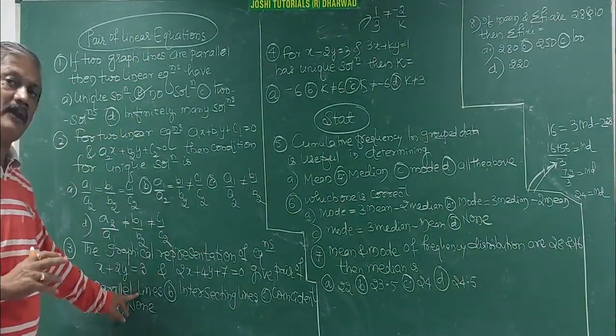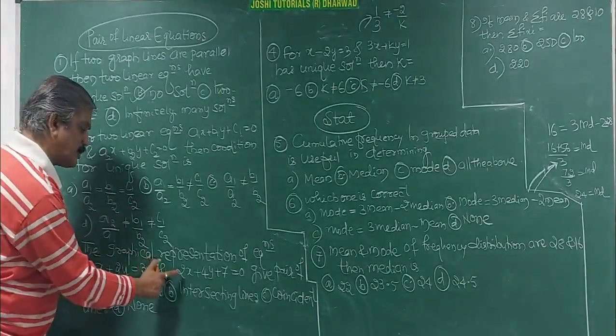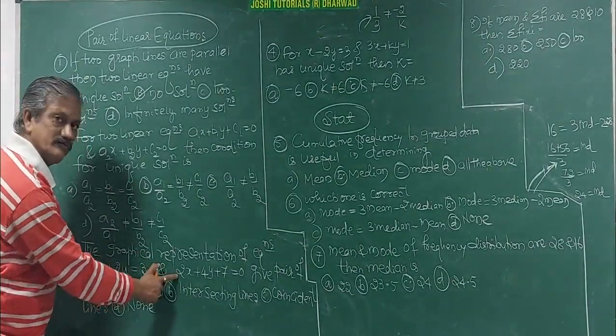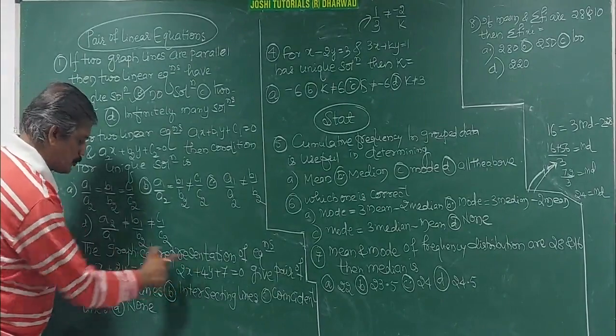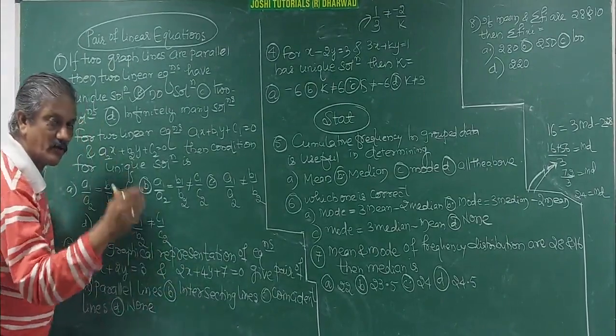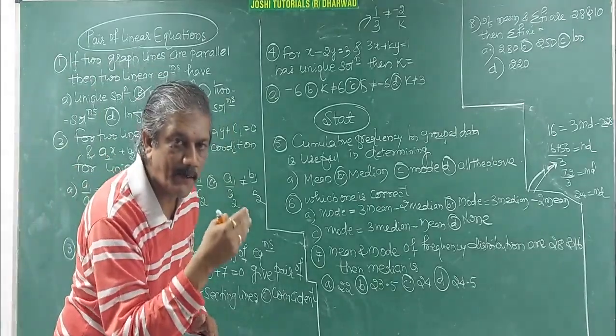Correct answer is parallel line. How to identify? A1 by A2, 1 by 2. B1 by B2, 2 by 4 is 1 by 2. Means A1 by A2 is equal to B1 by B2.